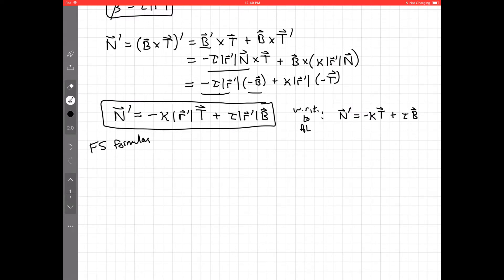let's write down kind of the summary of the Frenet-Serret formulas. And I'll write them down first kind of the full form for a general parameterization. We have t' is kappa speed n.